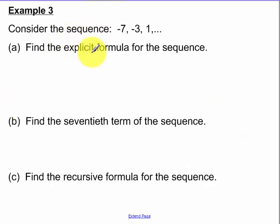Consider the sequence, write the explicit form, find the 17th, find the recursive formula. So what you want to do is recognize, is this arithmetic or geometric? Am I adding a common number to get to the next terms or am I multiplying by a common number? So the difference between these terms, I'm adding 4. And it is arithmetic.